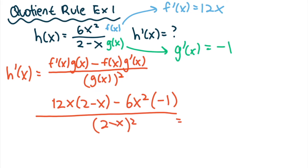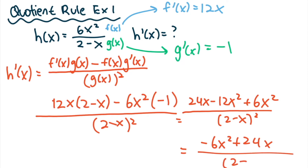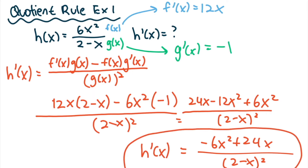So let's simplify. We get 24x minus 12x squared plus 6x squared, all over 2 minus x squared. Combining like terms on top: negative 12x squared plus 6x squared gives us negative 6x squared plus 24x, all over 2 minus x squared. So that's the derivative of h of x.